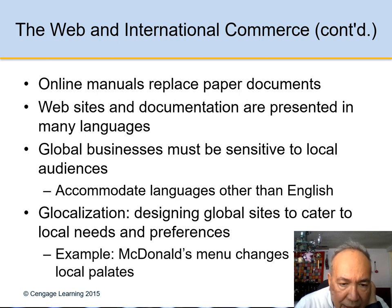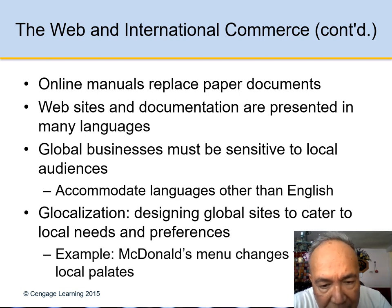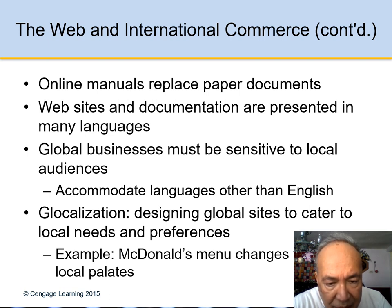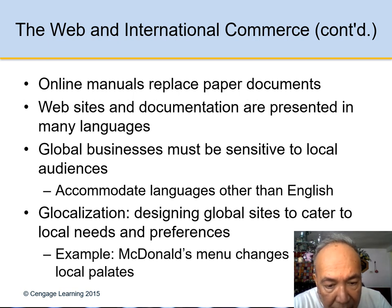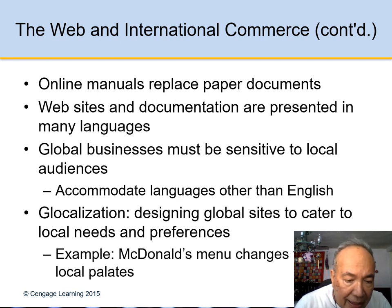The web and international commerce: online manuals now replace paper documents. Websites and documentation are presented in many languages, like Spanish and Chinese. Global businesses must be sensitive to local audiences and accommodate languages other than English. This is called glocalization — designing global sites to cater to local needs and preferences. McDonald's is an example, offering its site in Chinese, Spanish, and other languages.